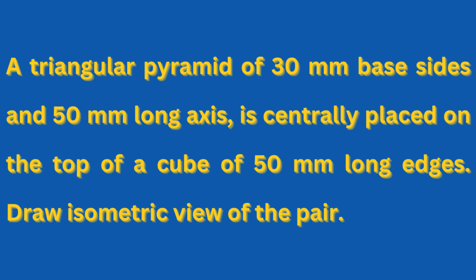We will draw the cube first and then place the triangular pyramid above it. Since the base of the pyramid is a triangle, all the sides will not be isometric lines. Therefore we will draw the actual view of the triangle first, and then draw the isometric view of the triangular pyramid.